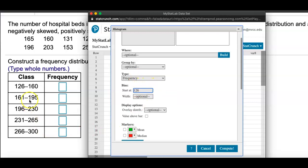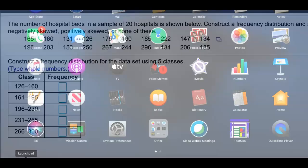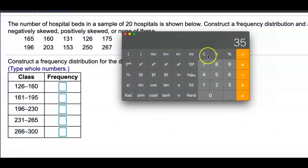Now look at the width. To figure that out, we will need to do 161 minus 126. We subtract the consecutive lower limits. 161 minus 126.